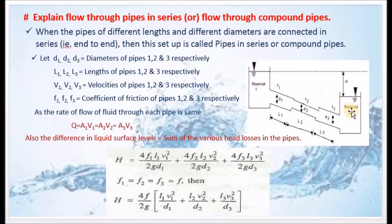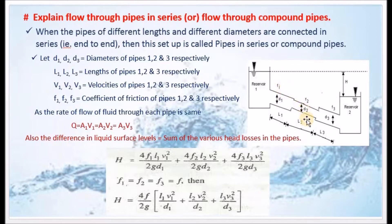Water flows from reservoir 1 to reservoir 2. The first pipe has length L1, diameter D1, and friction factor F1. The second pipe has length L2, diameter D2, and friction factor F2. The third pipe has length L3, diameter D3, and friction factor F3.